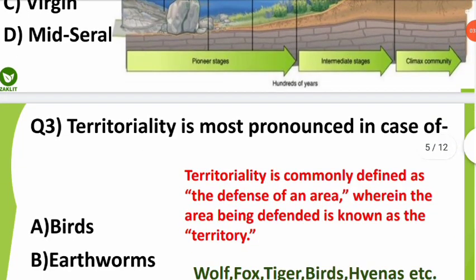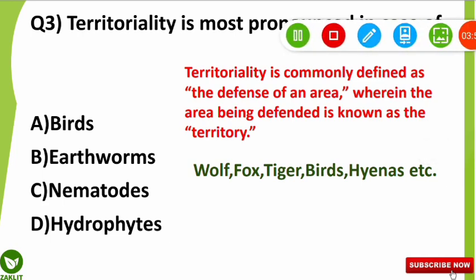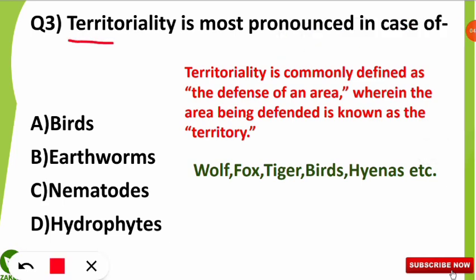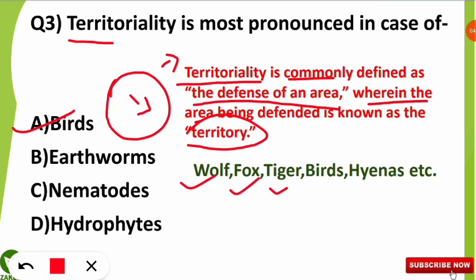The third question: territoriality is most pronounced in case of which of the following organisms? The correct option will be birds. Territoriality is commonly defined as the defense of an area, where the area being defended is known as the territory. Similar organisms of the same species make a territory or boundary where they live and defend that area from others.